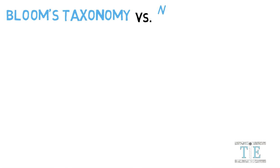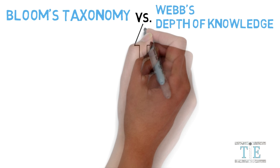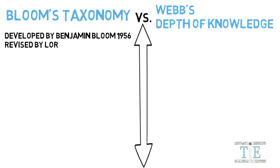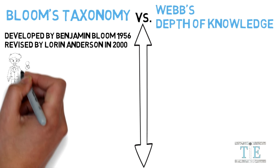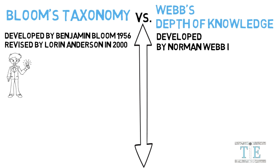Bloom's Taxonomy vs. Webb's Depth of Knowledge. Bloom's Taxonomy was developed by Benjamin Bloom in 1956 and revised by Lauren Anderson in 2000. Webb's Depth of Knowledge was developed by Norman Webb in 1997. Norman Webb was a research scientist who came up with the Depth of Knowledge system.